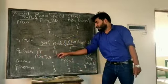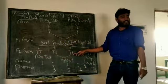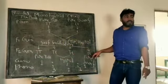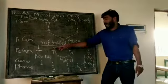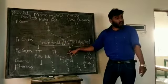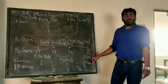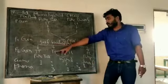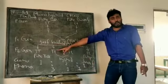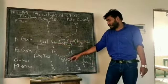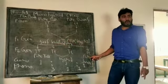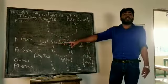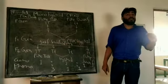In the F2 generation: 1 pure tall (TT), 2 hybrid tall (Tt), and 1 pure dwarf (tt). The genotype ratio is 1 is to 2 is to 1.